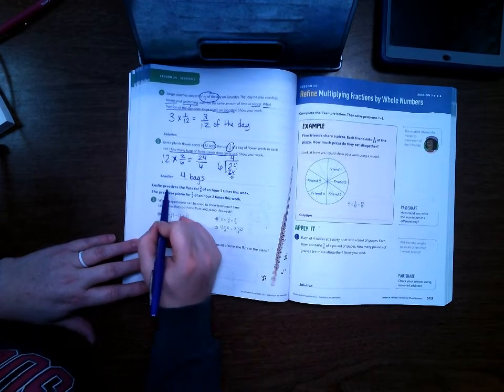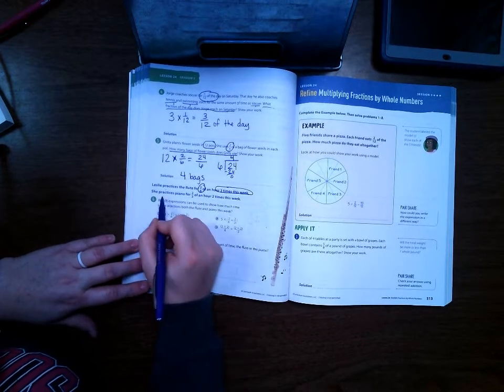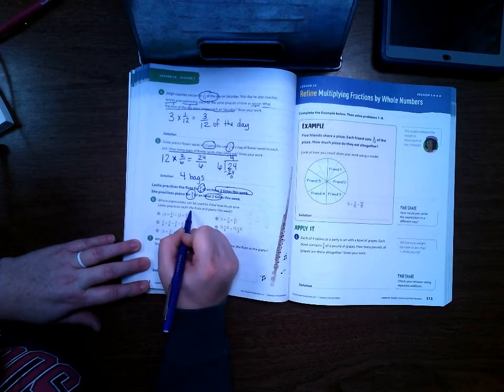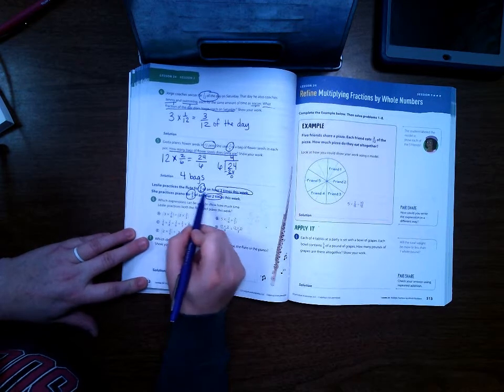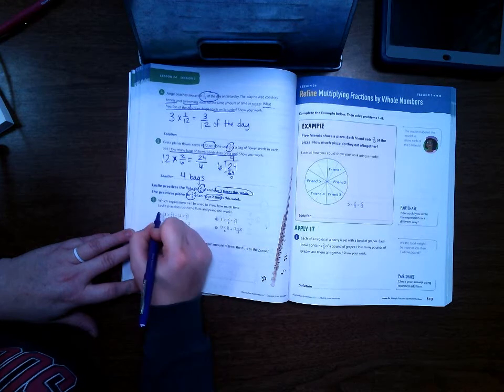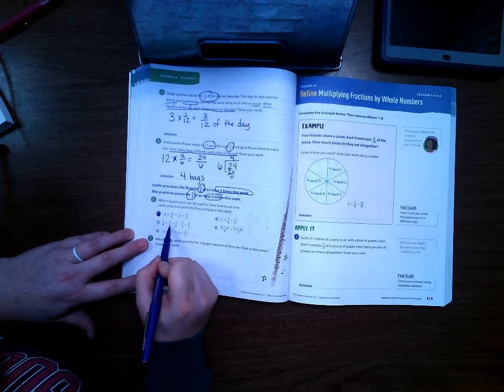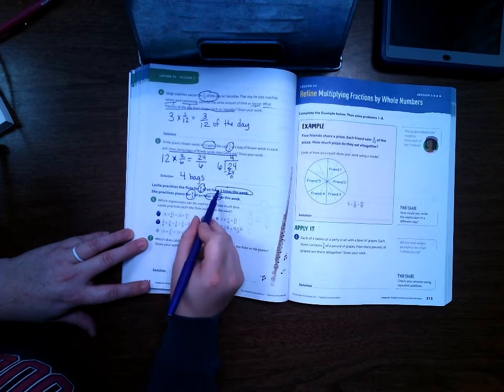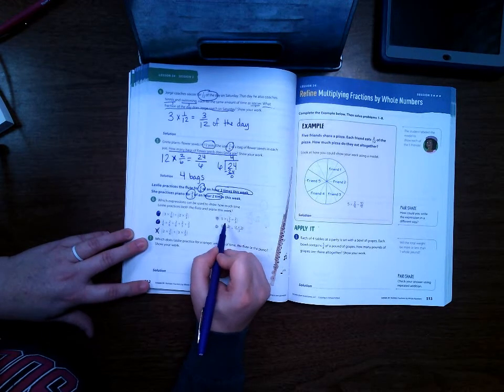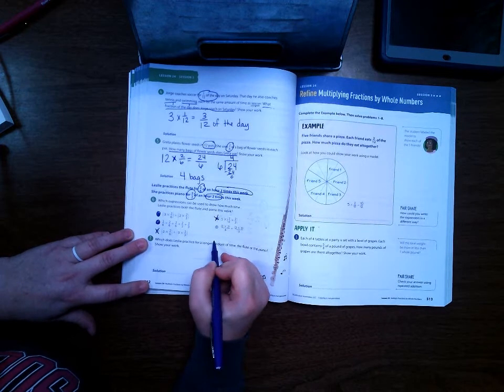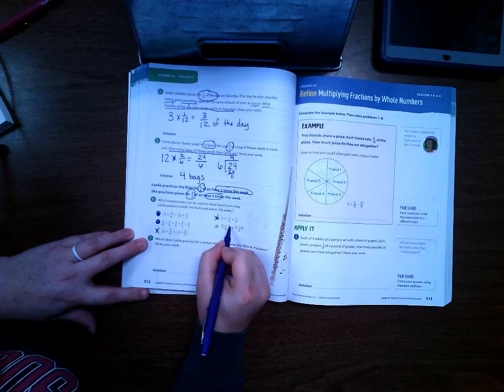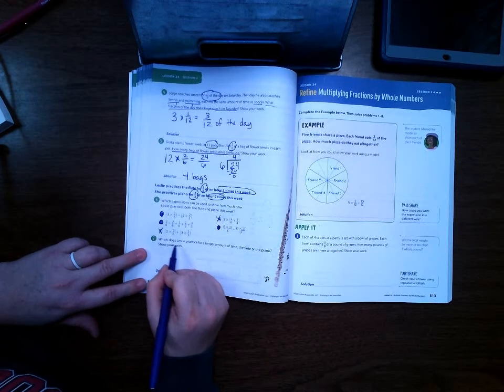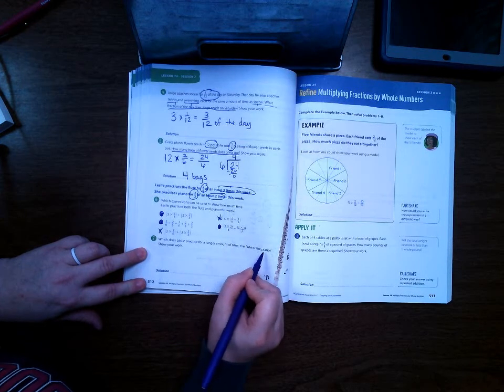Number six. Leslie practices the flute for two-sixths of an hour three times this week. She practices the piano for two-thirds of an hour two times this week. Which expression can be used to show how much time Leslie practices both the flute and piano this week? So we have three times two-sixths plus two times two-thirds. Yep, that one works. Could we do two-sixths plus two-sixths plus two-sixths? Yes. Plus two-thirds plus two-thirds? Yep. Two times two-sixths? No, that doesn't match. Could we do five times two-sixths plus two-thirds? No. And then this one's kind of tricky, but it's right. Three times two over six plus two times two over three? Yes. We will not be using that one, though.